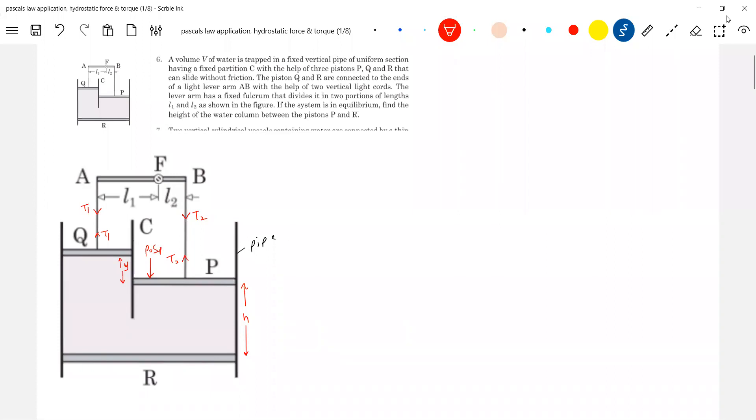Sp is the area of cross-section. Similarly, air will exert a force P0 times Sq. The air will exert a force on this piston.